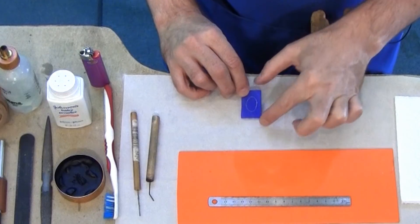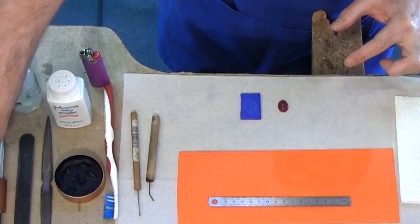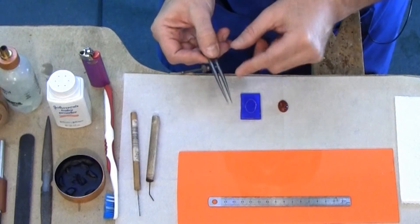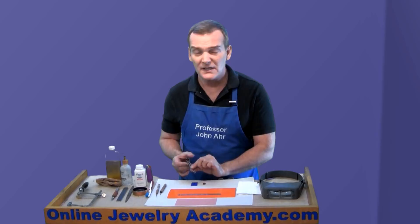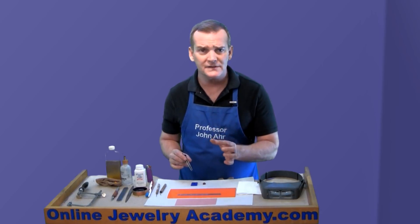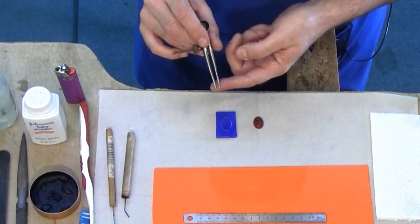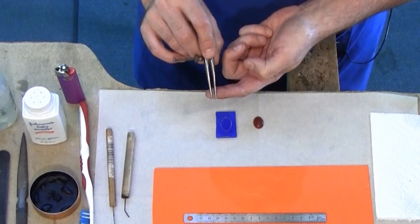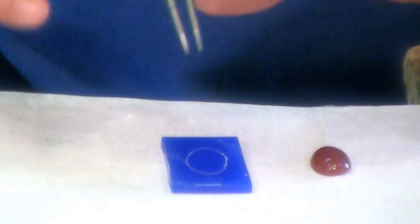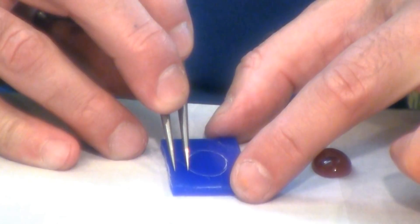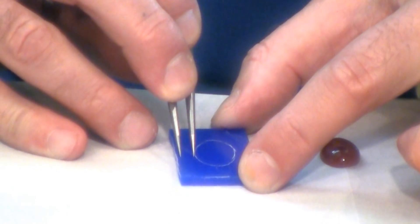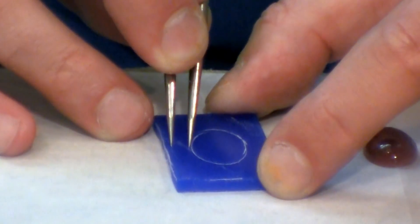The next thing that you want to do is you want to take your dividers and set them to create a margin around this piece. You can make it as wide or as narrow as you like. In this case, I'm setting it to approximately about four millimeters wide. What you're going to do is just take your time, and you're going to use the inside line as a guide, and you're just going to go slowly around your piece.